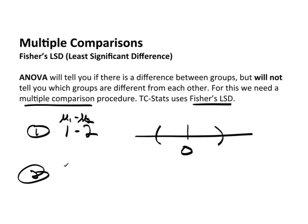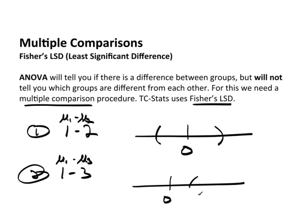Now if we do another one, say groups one and three — mean of one minus the mean of group three — and zero is not in the interval, that's saying that these groups are, in fact, different. So I now know that groups one and three are different, but one and two are not. It's that type of logic that we're going to look for.